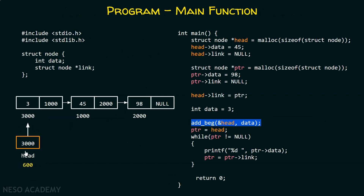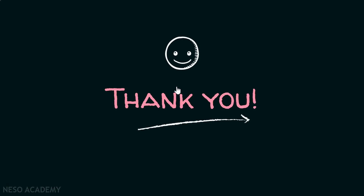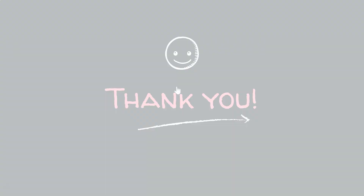You can see this clearly — this head is pointing to the first node, that is this node of the list. So now we have the head pointer, which is the updated head pointer in the main function, pointing to the first node of the linked list. After that, ptr will get updated, and because of this block of code, we would be able to print the output 345 and 98 on the screen. Thank you for watching this presentation.